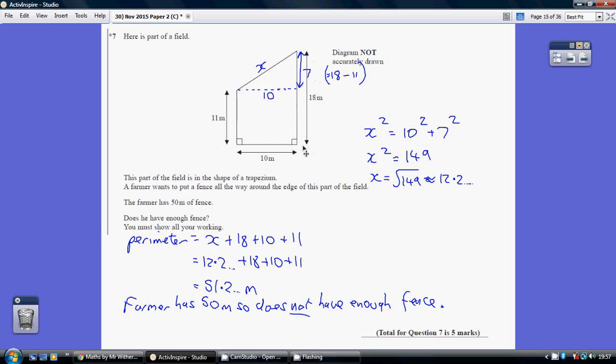So we've got 18 plus 10 plus 11 plus this diagonal here. So really the difficult part of this question was to spot that you can work out this length here by way of Pythagoras.